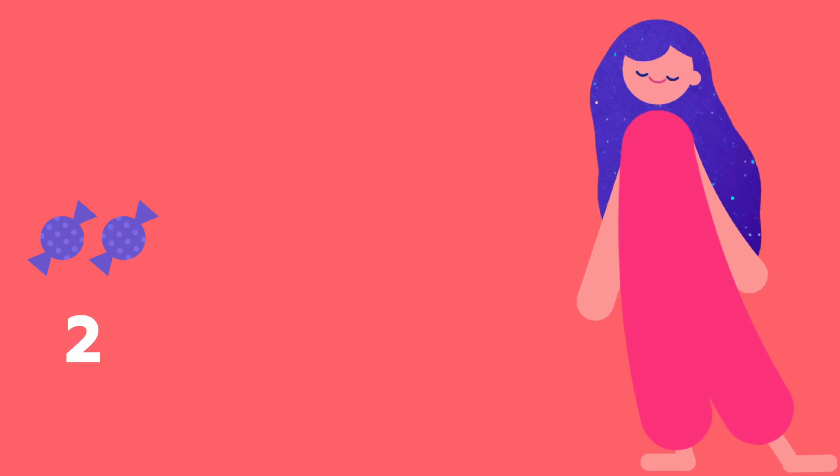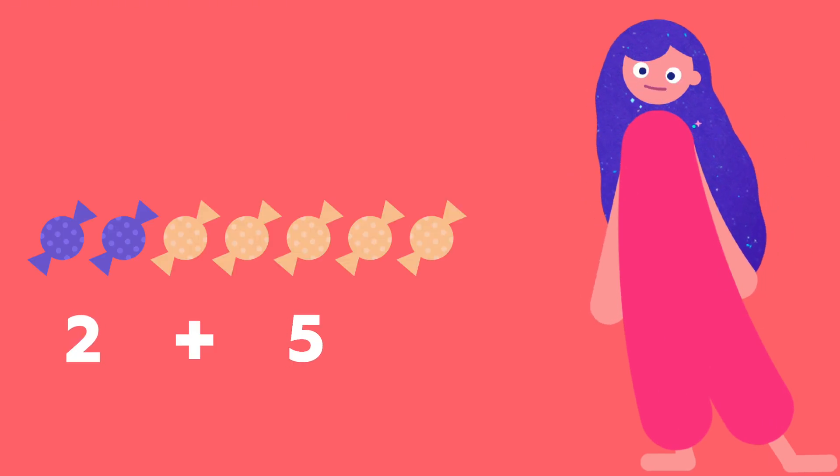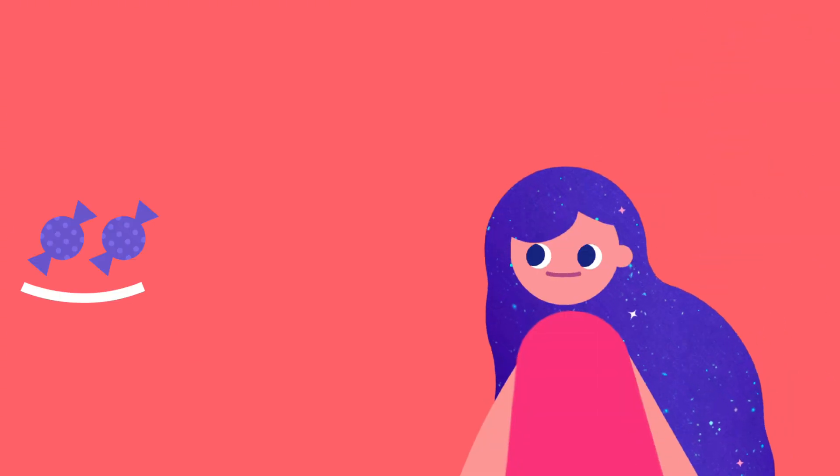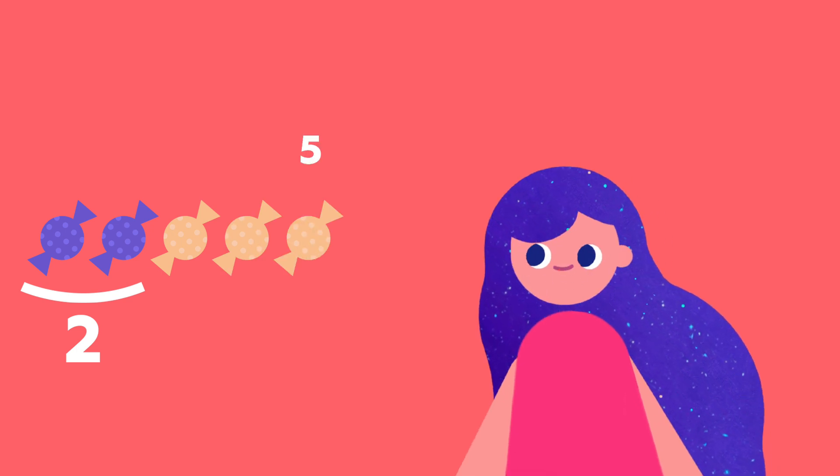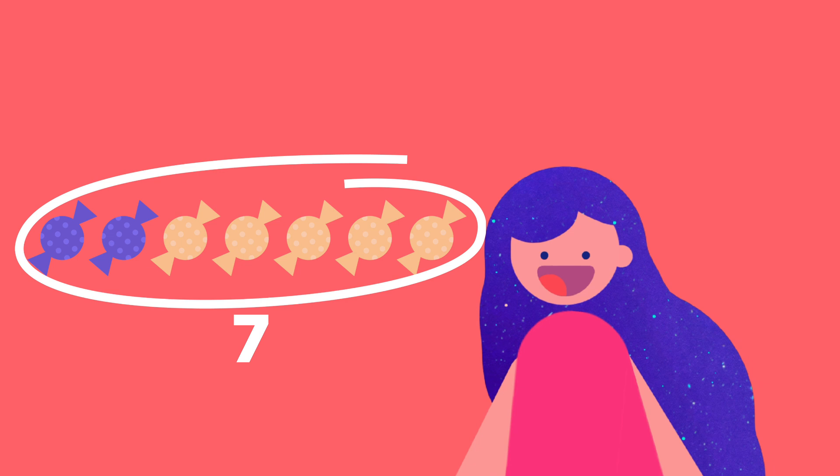I have two candies. And I have five more. That will be two plus five. How many is that? We can count. So it's two. Then three. Four. Five. Six. Seven. Seven in total. We did it.